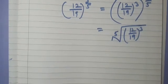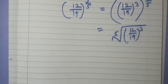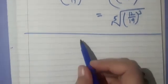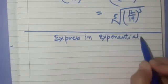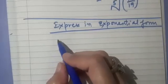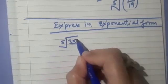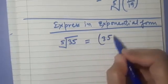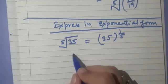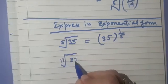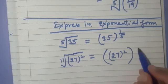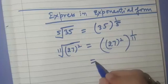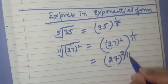Now let us quickly express more in exponential form. The 5th root of 35 is 35 raised to the power 1 by 5. The 11th root of 27 squared: we write it as 27 squared raised to the power 1 by 11, which gives us 27 raised to the power 2 by 11.